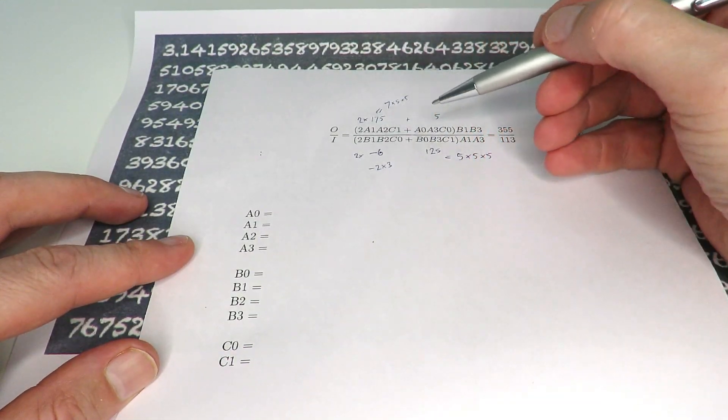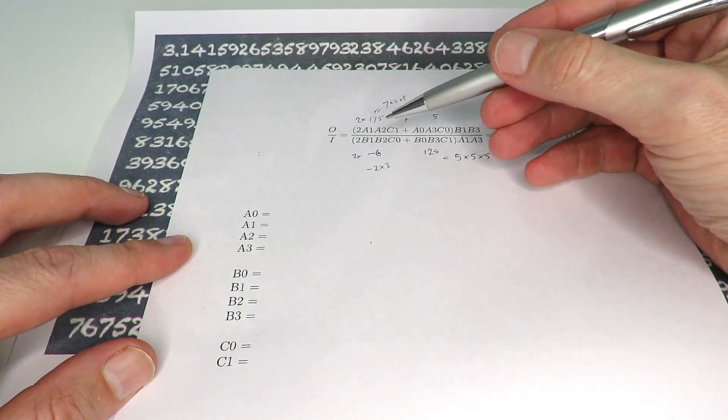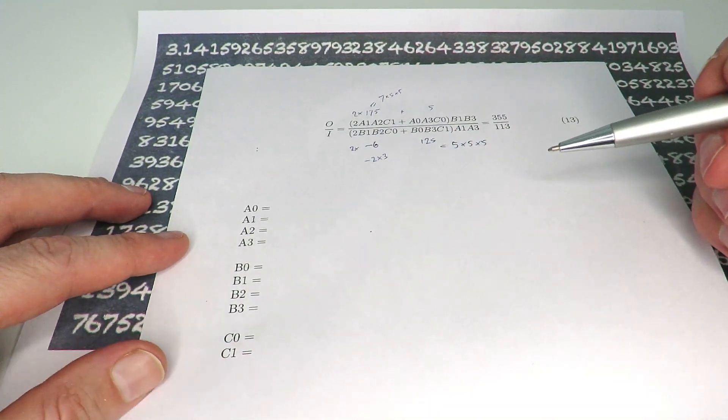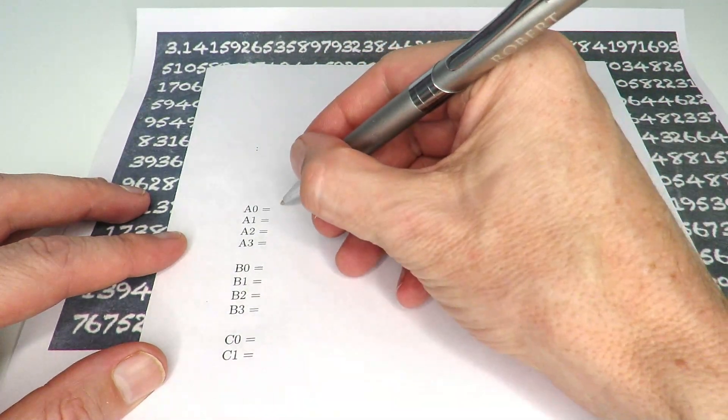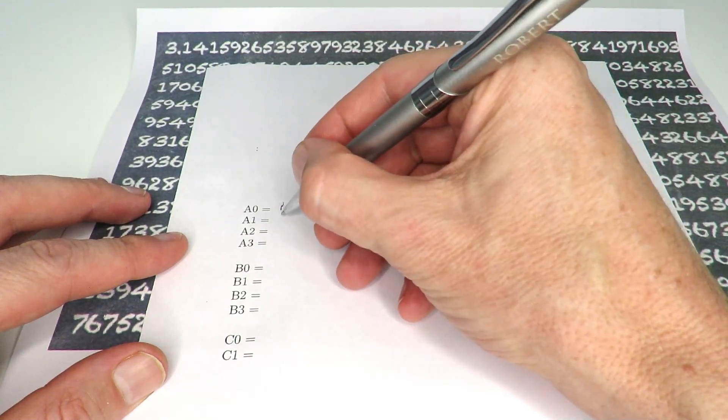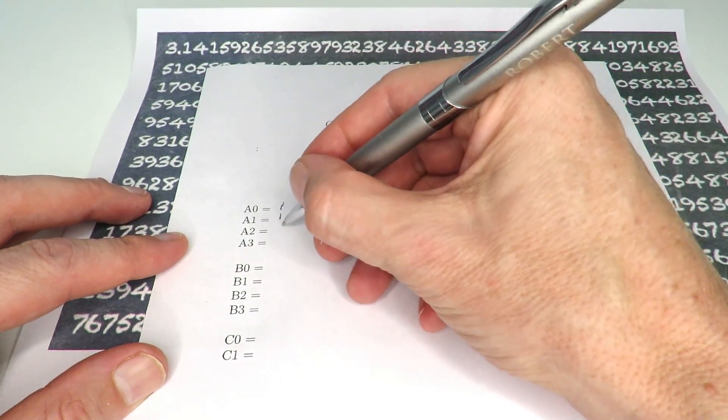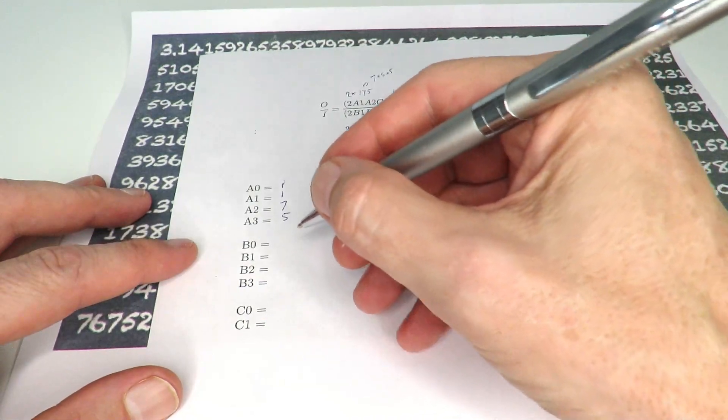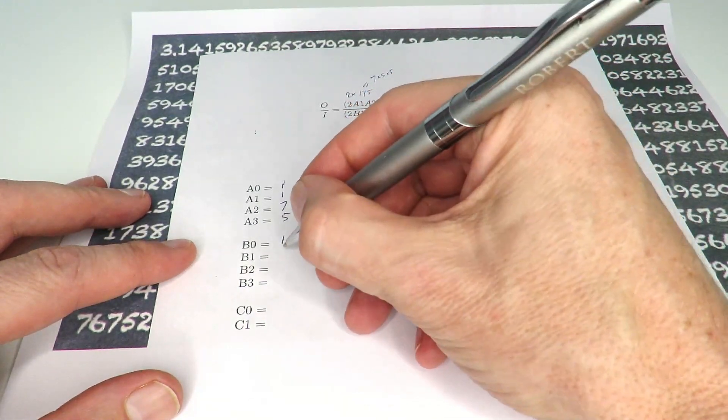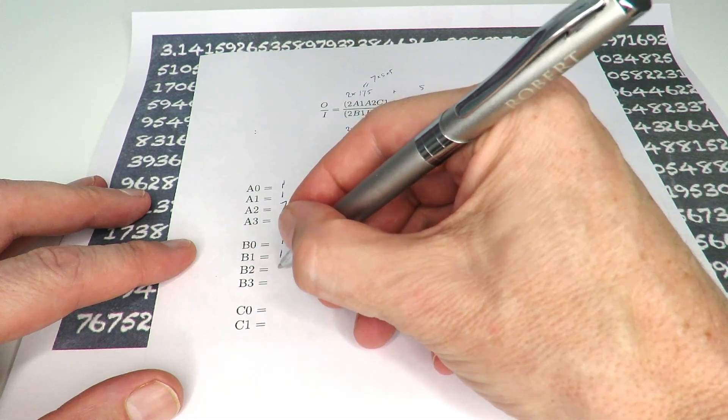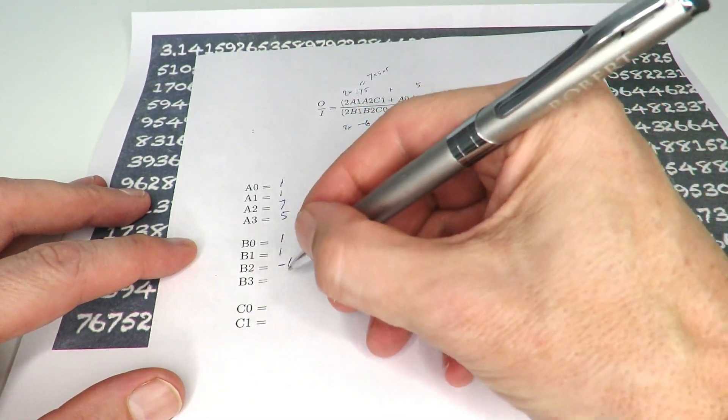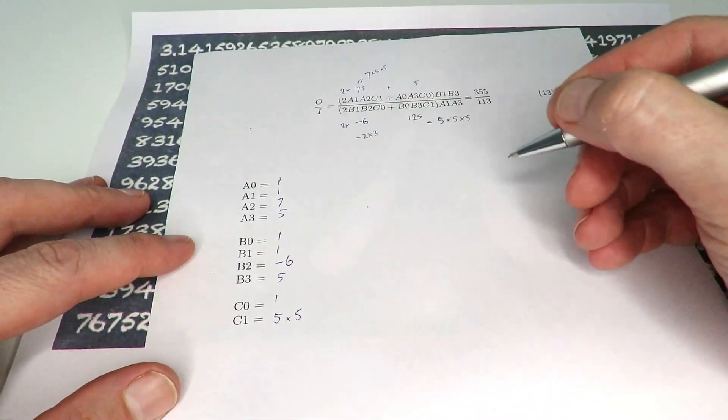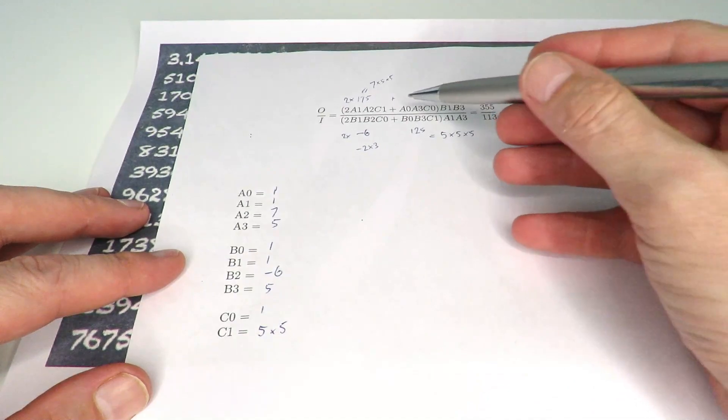So now that we've picked the values up here, we just need to convert those into a1, a2, b1, b2, etc., all the way to c1. I've got a worksheet here and the solutions I've picked are that a0 is equal to 1, a1 is equal to 1, a2 is equal to 7, a3 you can use 5, b0 can be 1, b1 is 1, b2 is minus 6, b3 is 5, c0 is 1, and c1 is 5 times 5.